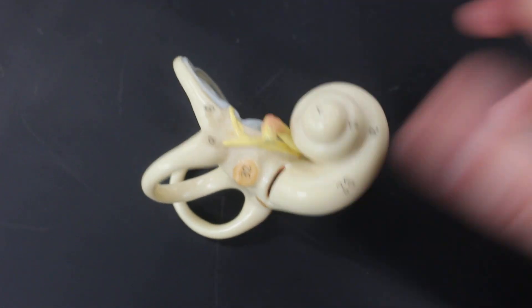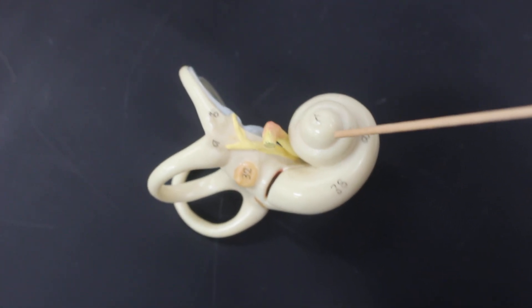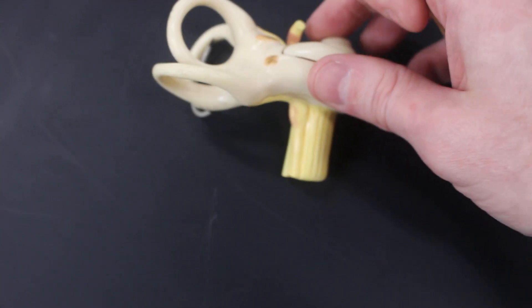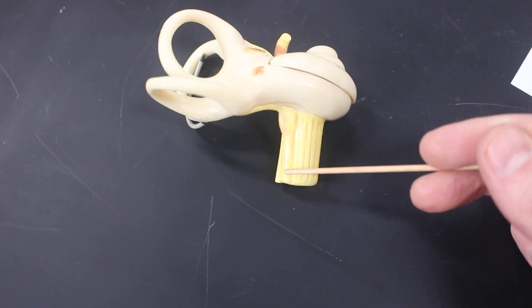This area right here that looks kind of like a snail shell, that is the cochlea. And coming out of the cochlea is the vestibulocochlear nerve.